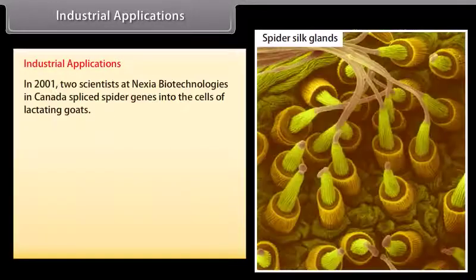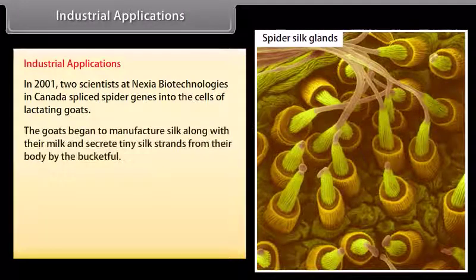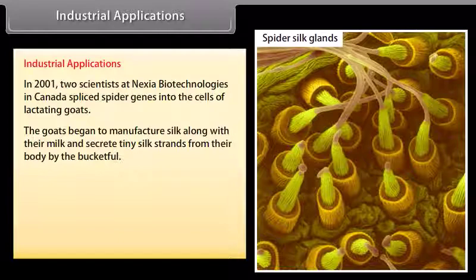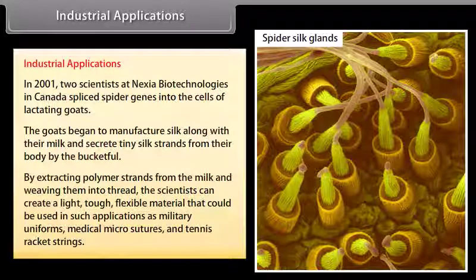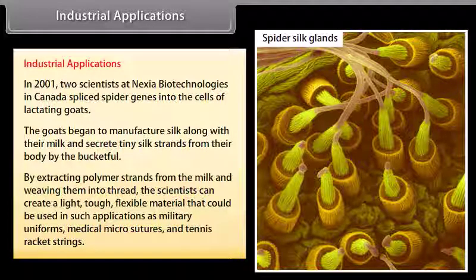In 2001, two scientists at Nexia Biotechnologies in Canada spliced spider genes into the cells of lactating goats. The goats began to manufacture silk along with their milk and secrete tiny silk strands from their body by the bucketful. By extracting polymer strands from the milk and weaving them into thread, the scientists created a light, tough, flexible material that could be used in military uniforms, medical micro-sutures, and tennis racket strings.